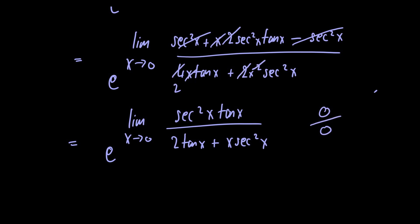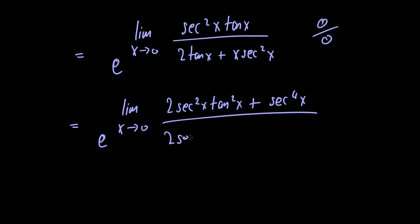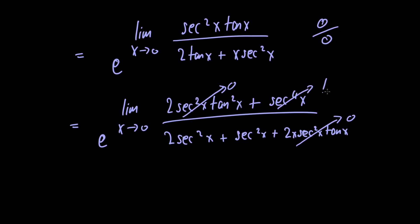This limit is again of indeterminate form 0 over 0, so we apply L'Hôpital's rule a third time. We get e raised to the limit as x approaches 0 of 2 secant squared of x times tangent squared of x plus secant to the fourth of x, divided by 2 secant squared of x plus secant squared of x plus 2x times secant squared of x times tangent of x. Now we let x tend to 0: all terms with tangent of x vanish since tangent of 0 is 0, and secant of 0 is 1. This gives e raised to 1 divided by 2 plus 1, which equals e to the 1 over 3.